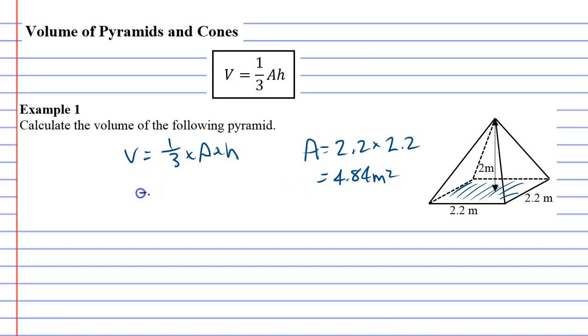Now we can do our volume: one third times area 4.84 times height which in this case is 2 meters.